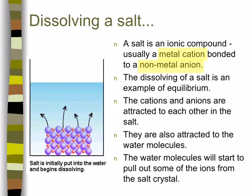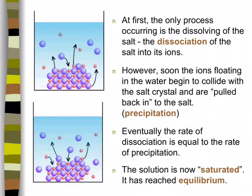When you drop that solid into water, the water molecules are attracted to the positive and negative ions and pull them away from the salt crystal. The ions are initially attracted to each other, but they're also attracted to polar water molecules, so water pulls them away from the solid. That process — where the ions leave the solid state and go into the aqueous state, dissolved in the water — is called dissociation.